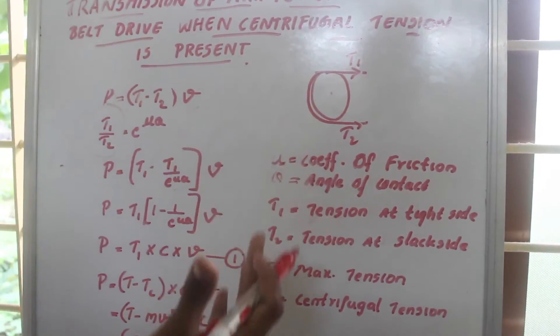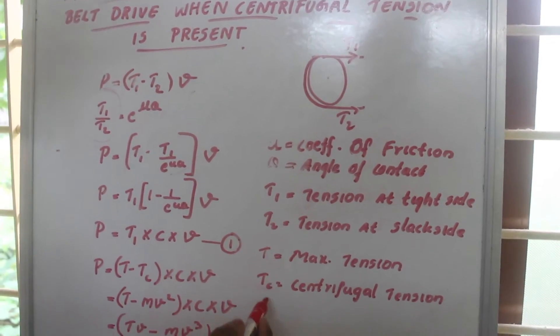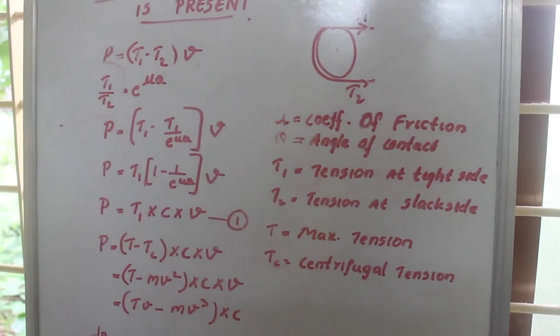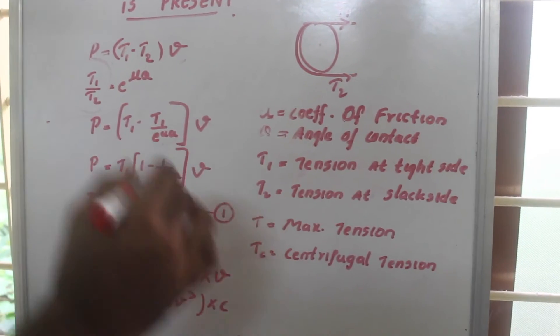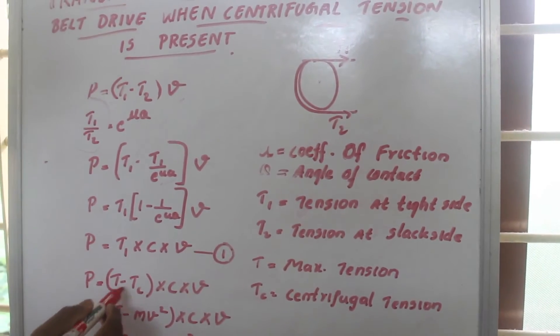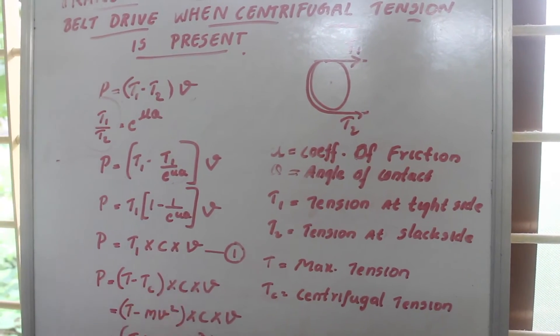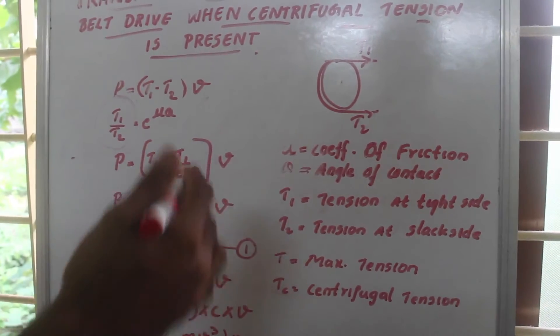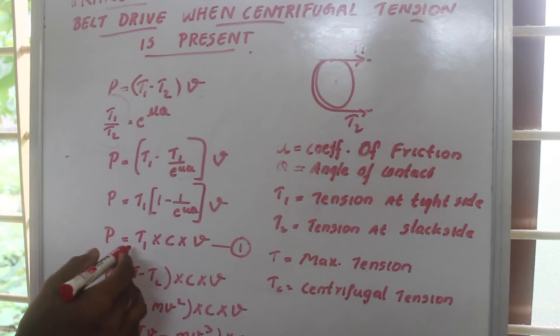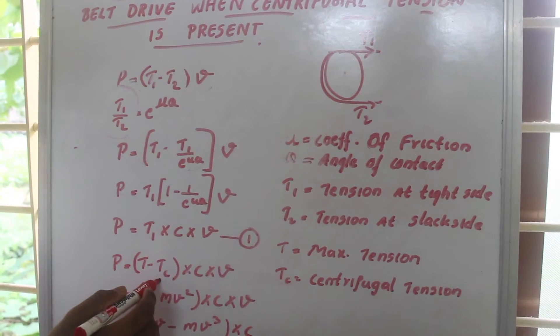Tc is the centrifugal tension, and we know that T1 is equal to T minus Tc, or T2 is equal to T minus Tc, or T1 is equal to T minus Tc.